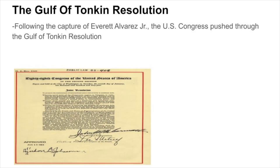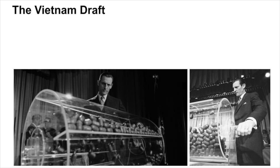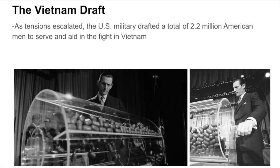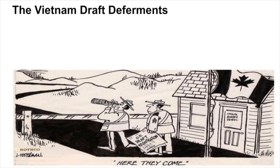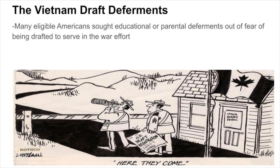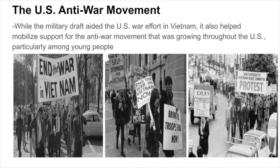Following this, the U.S. Congress pushed through the Gulf of Tonkin Resolution, which allowed President Johnson to escalate U.S. involvement in Vietnam without a formal declaration of war. As tensions escalated, the U.S. military drafted a total of 2.2 million American men to serve in Vietnam. This draft caused many men to volunteer for the armed forces for more choice in their branch, while others sought educational or parental deferments, and thousands fled to Canada. The draft also helped mobilize support for the anti-war movement growing throughout the U.S., particularly among young people.